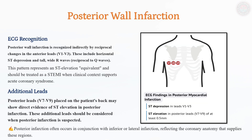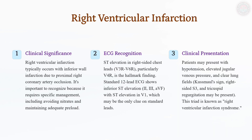Since the standard ECG does not directly capture posterior infarction, it is inferred from ST depression in V1–V3, representing a mirror image of posterior ST elevation. Tall R waves in these leads also suggest posterior involvement. Leads V7–V9 should be recorded to confirm the diagnosis. Right ventricular infarction (RVI), often associated with inferior MI due to proximal RCA occlusion, is confirmed by ST elevation in V1 and right-sided leads V3R to V6R. Unlike left-sided infarctions, RVI requires fluid resuscitation to maintain preload, while nitrates and diuretics should be avoided to prevent hypotension.